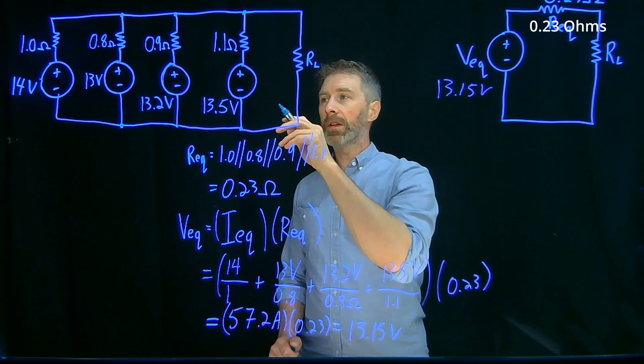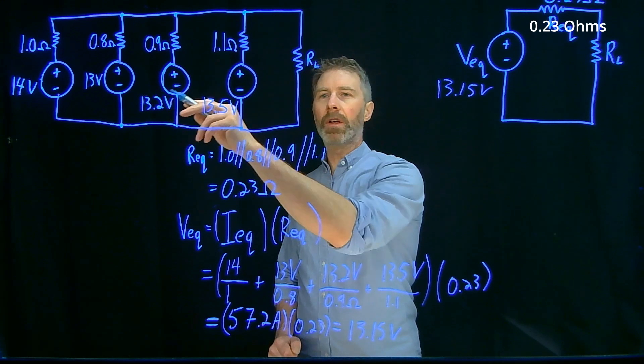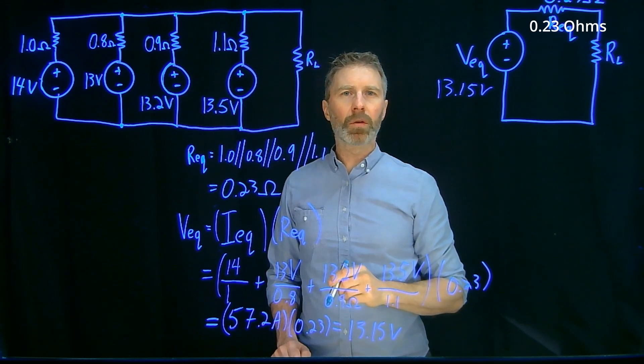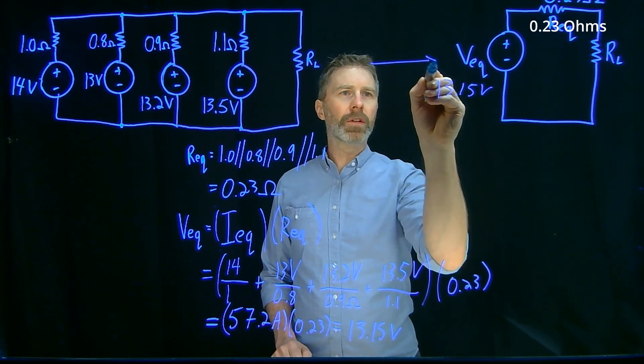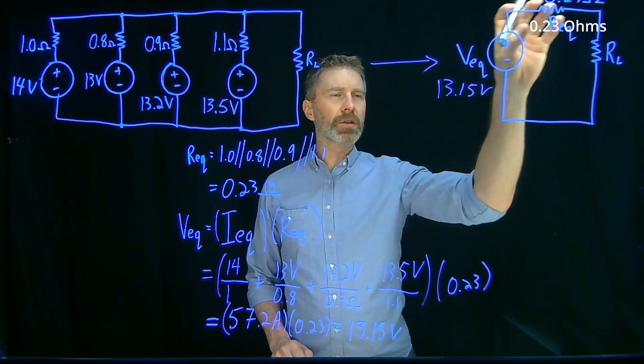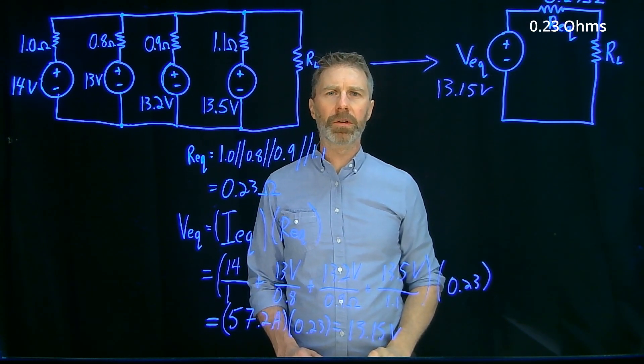So I have gone through the process, and I have reduced this circuit with its four parallel voltage sources into an equivalent circuit with one voltage source and its corresponding equivalent output resistance.